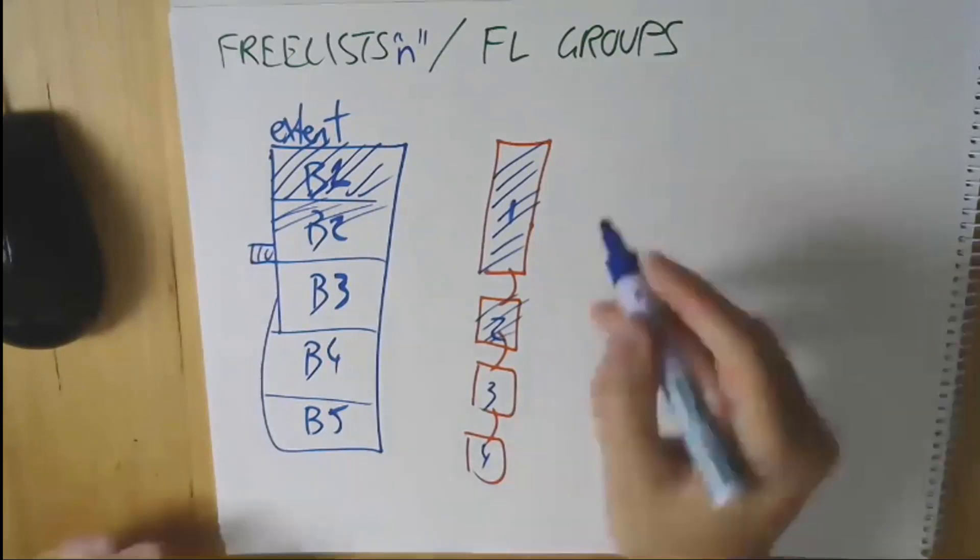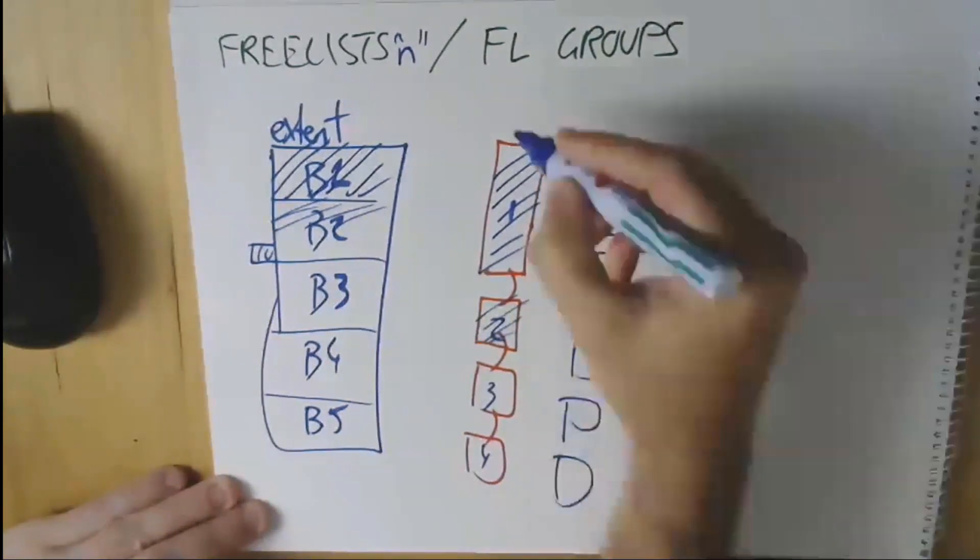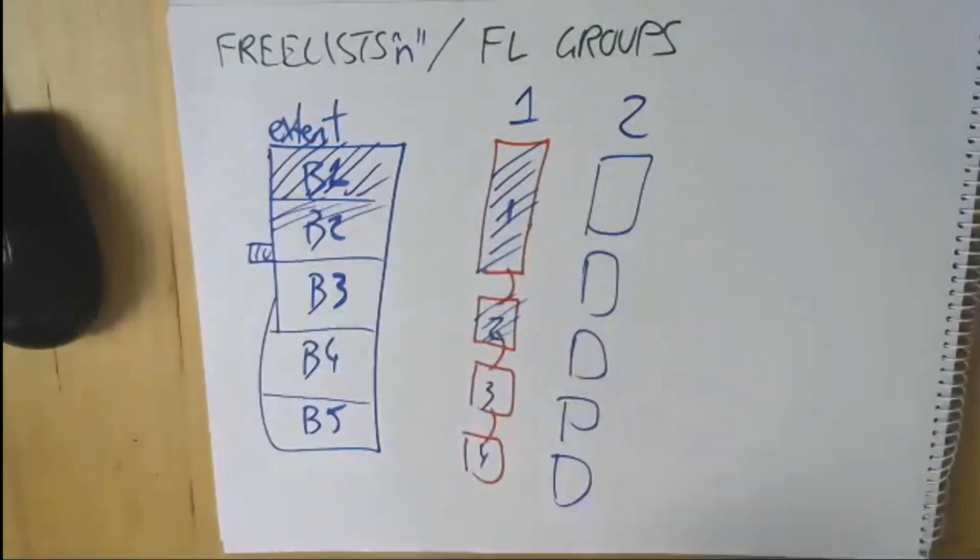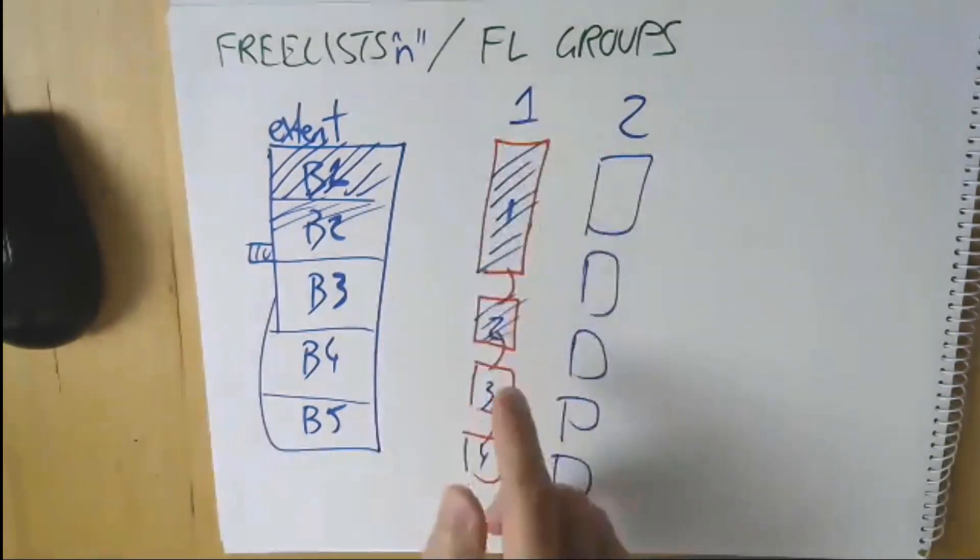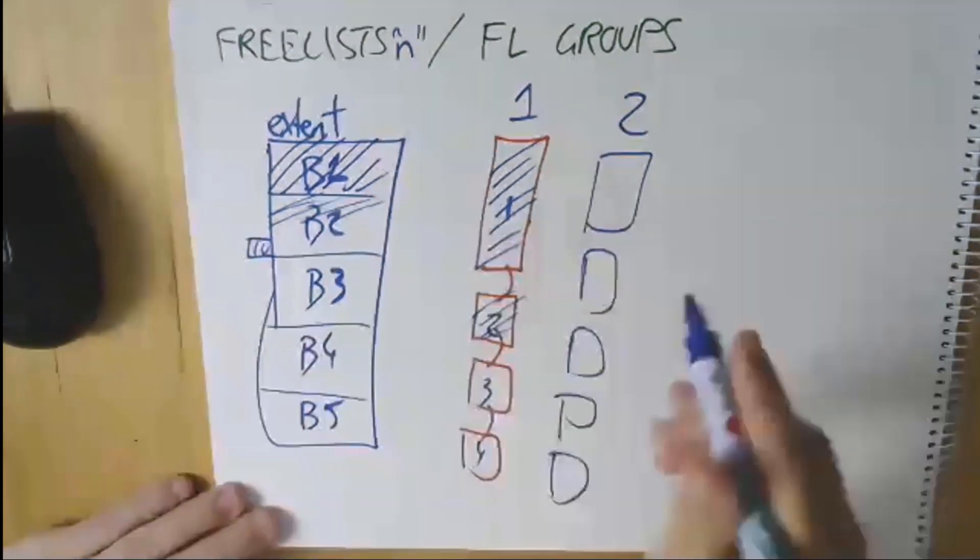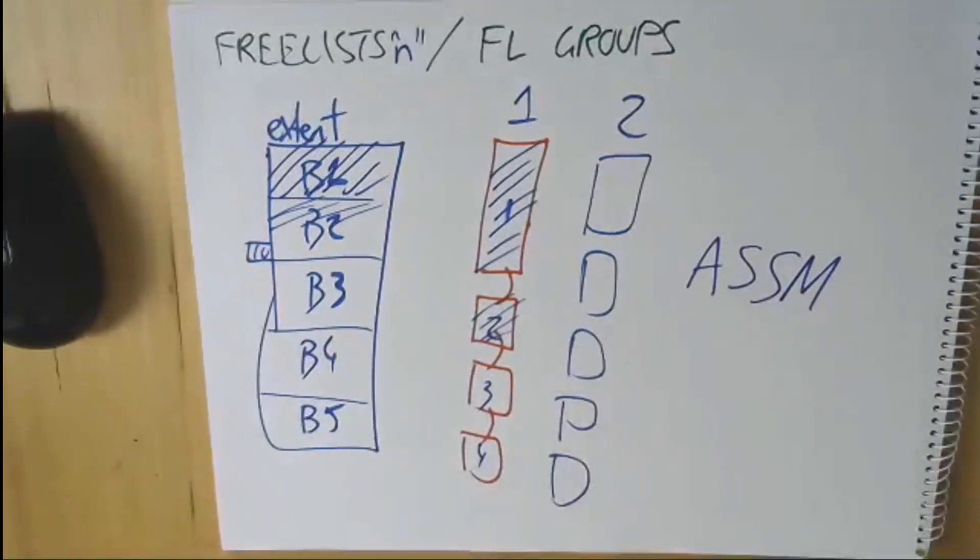That's when the concept of freelist groups came in. You would have freelist group one, freelist group two, etc. Each individual instance on a RAC or Parallel Server node could be given dedicated access to a particular freelist group. In that way, we didn't have a lot of cross-instance chatter for managing all this stuff.